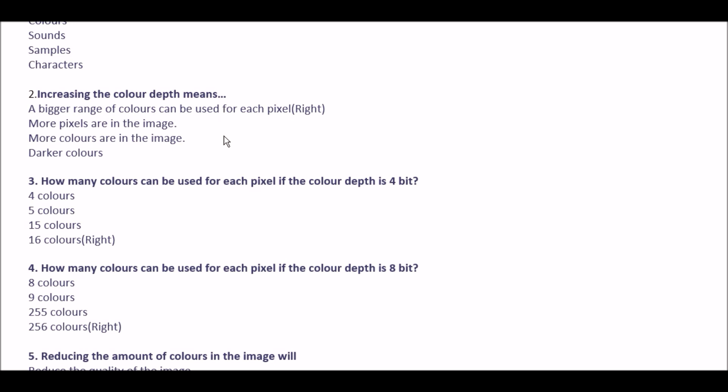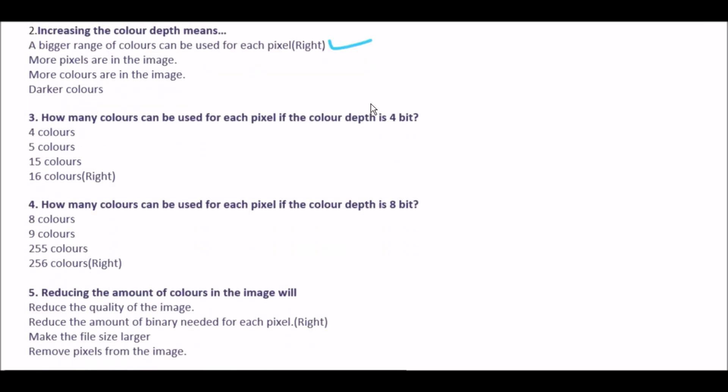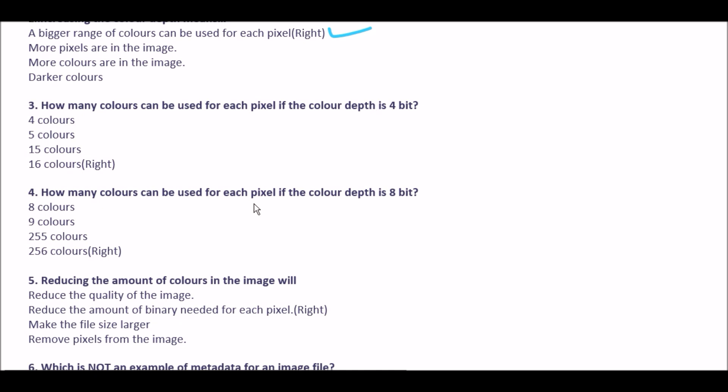Second question: increasing the color depth means — option A a bigger range of colors can be used for each pixel, option B more pixels are in the image, option C more colors are in the image, option D darker colors. The right answer is option A: a bigger range of colors can be used for each pixel.